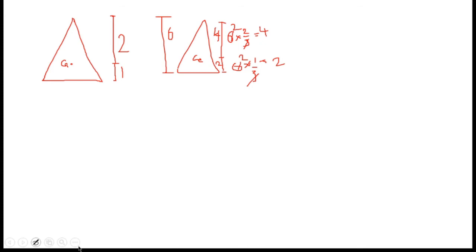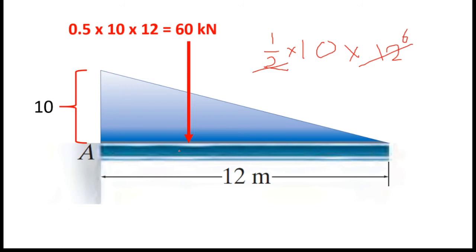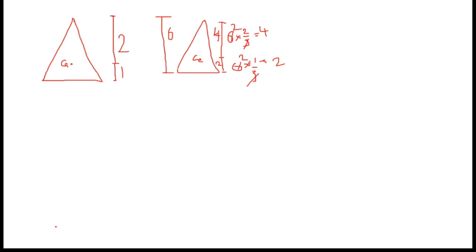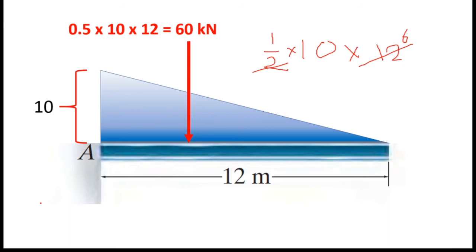Now we're going to use the moment equation at point A. We will sum the moments about A to find the reaction. The distance from A is 4 meters for one load and 6 meters for the other.